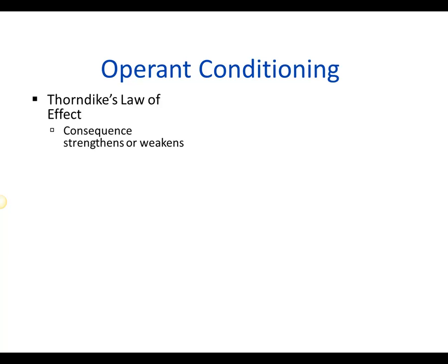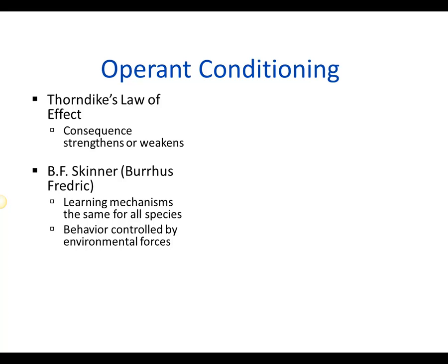Thorndike hypothesized that consequences of a behavior strengthen or weaken a behavior, and he suggested that if something followed a behavior that was comfortable and nice, that behavior was more likely to be replicated. B.F. Skinner picked up that theory and ran with it, applying it to experimentation, working primarily with animals. He was really able to look at how species learned and believed that learning mechanisms were the same for all species, and that behavior was controlled by environmental forces.